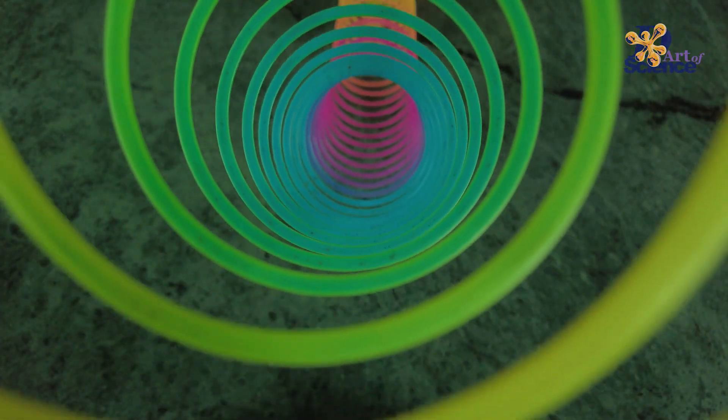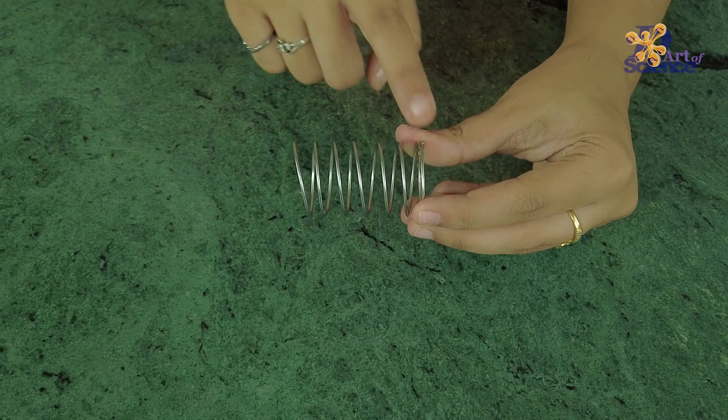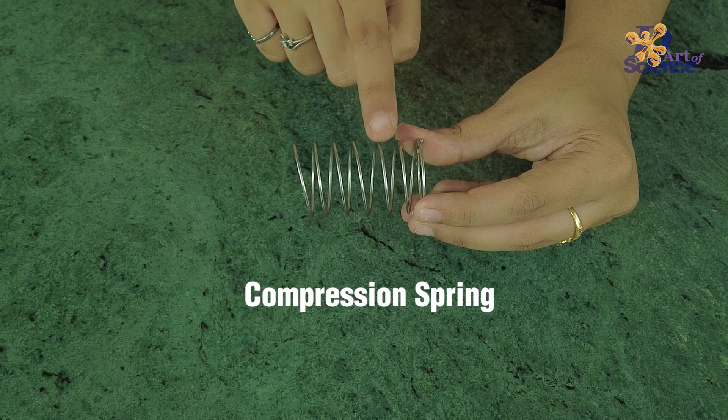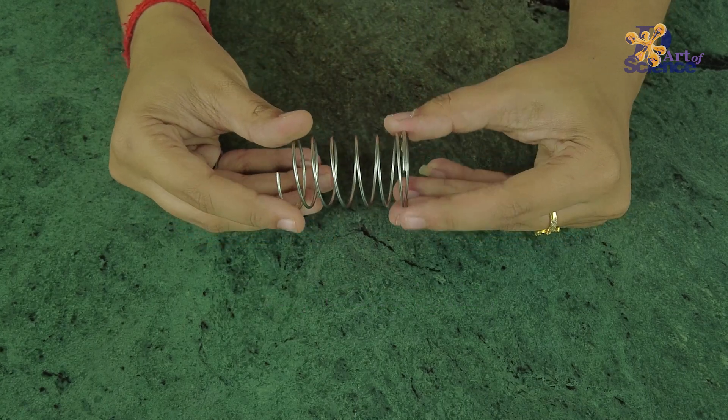First let's look at what a slinky is. Slinky is a type of spring. The springs you usually see are called compression springs. There is a gap between the coils of this spring. We can apply pressure and bring the coils closer but once we leave it it bounces back to its original form.